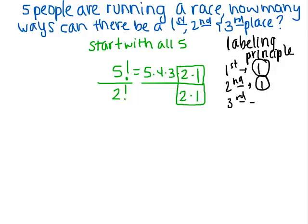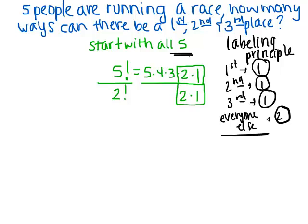Everyone else is two people. What the labeling principle tells me to do is take the total ways I can group everybody — how many ways I can group all five — and divide it by the orderings of these groups. This works out perfectly because the ordering of everybody else is just two times one. If all of these groups have one person, I would put in one factorial, one factorial, one factorial, but those are all just ones and dividing by one changes nothing. So my answer in this case is five times four times three, which is 60 ways.